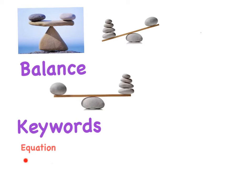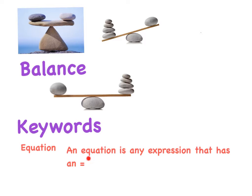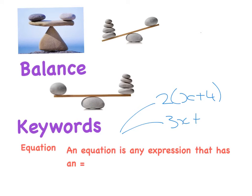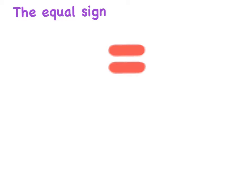The key word for today is an equation. An equation is any expression that has an equal symbol. So an expression — we've seen things like 2 bracket x plus 4, or 3x plus 6 — those are expressions. An expression is a mixture of variables and constants. So an equation is any expression that has an equal sign. The equal sign theoretically divides the sum into two parts, and the whole idea is to balance it out.